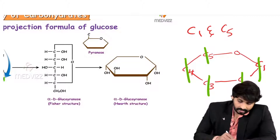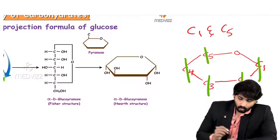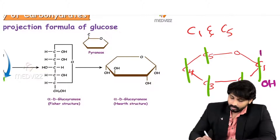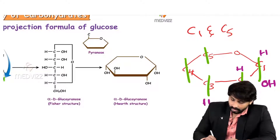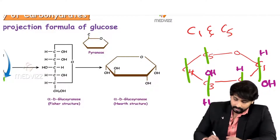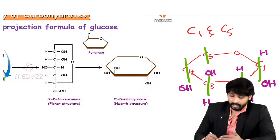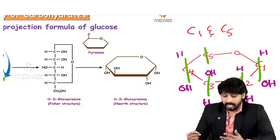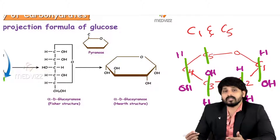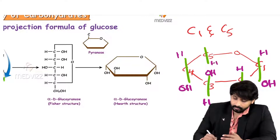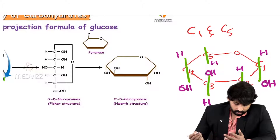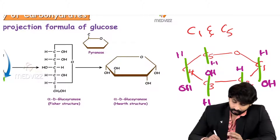For the first carbon, OH is present, so it goes below and hydrogen will be above. For the second carbon, OH is on the downside and hydrogen above. For the third carbon, hydrogen is on the right side, so it comes below the plane of the ring and OH is above. For the fourth carbon, the hydroxyl group is below the plane of the ring and hydrogen at the top. For the fifth carbon, there is no OH because that hydroxyl group participated in the oxide linkage with the first carbon — only hydrogen is left, coming below the plane. Above, we are left with the sixth carbon, CH2OH.